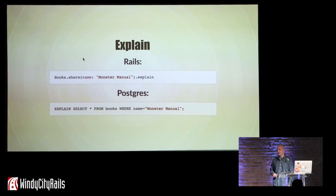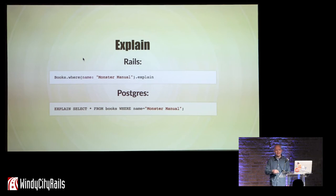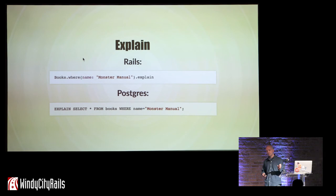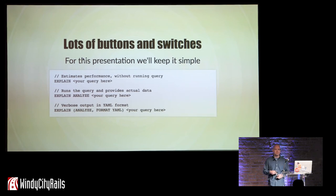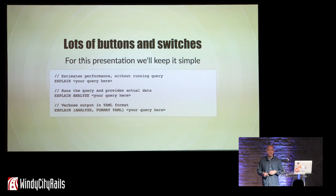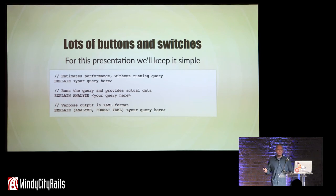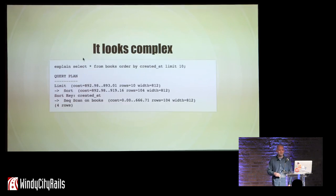Query plans — you get them by running explain. In ActiveRecord, you can just tag explain on the end of your chain of methods. In Postgres, you just put explain in front of your query. There are a lot of different options you can send into explain — you can have output in YAML and all this stuff — but we're going to keep it simple for this presentation.